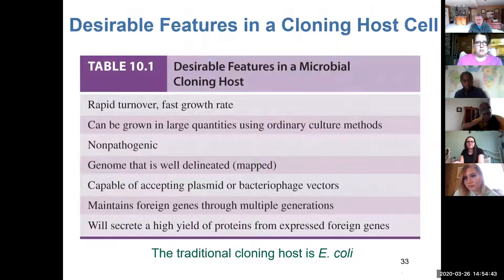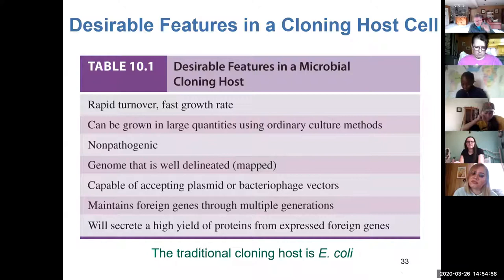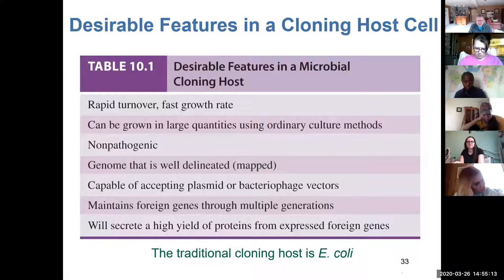In order to be a good cloning host cell — which we said were bacteria or typically yeast cells — they need to be able to be grown quickly, fairly cheaply, in large quantities, and maintain those genes from generation to generation as the cells replicate. All of the progeny are going to have that gene that was introduced. This gets at some of the various features that pharmaceutical biotechnologists look for when choosing a particular cell to introduce the gene into. E. coli is probably the most famous cloning bacterial cell used in research.